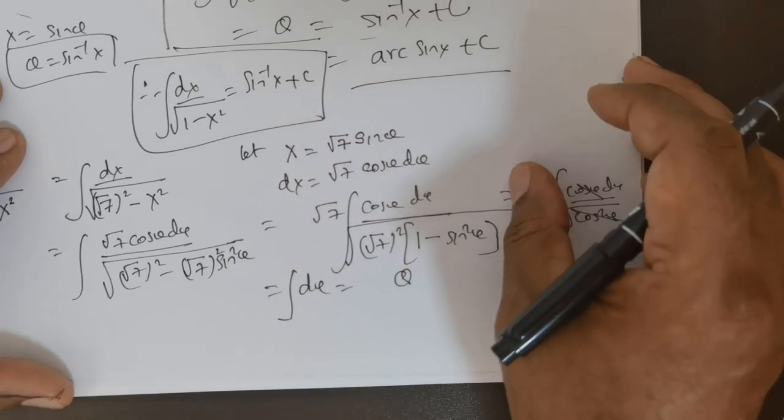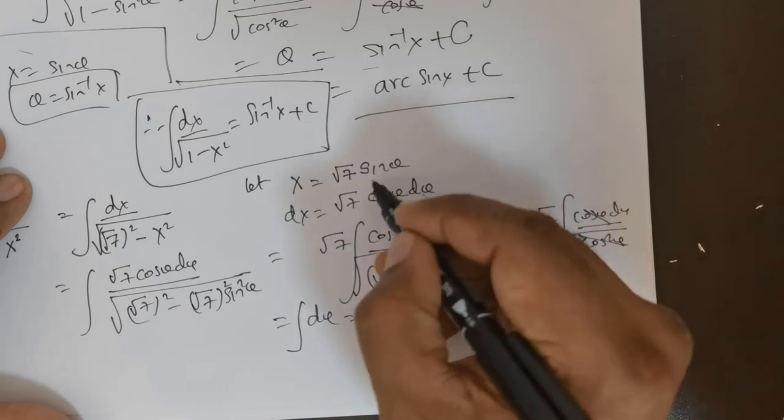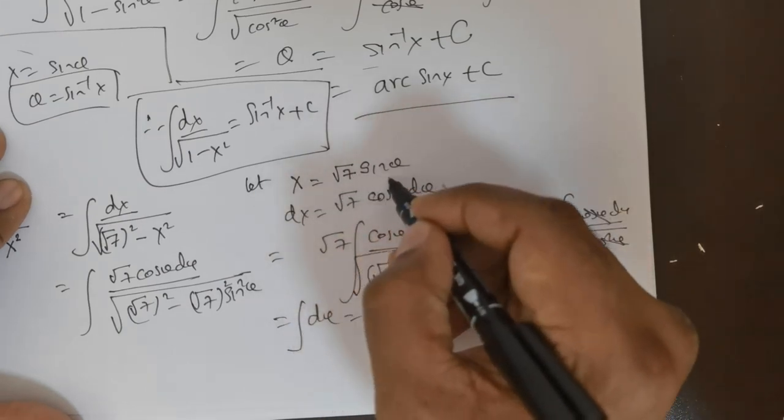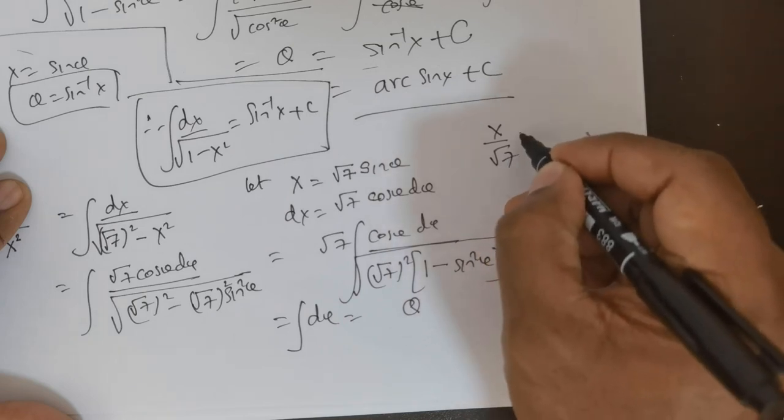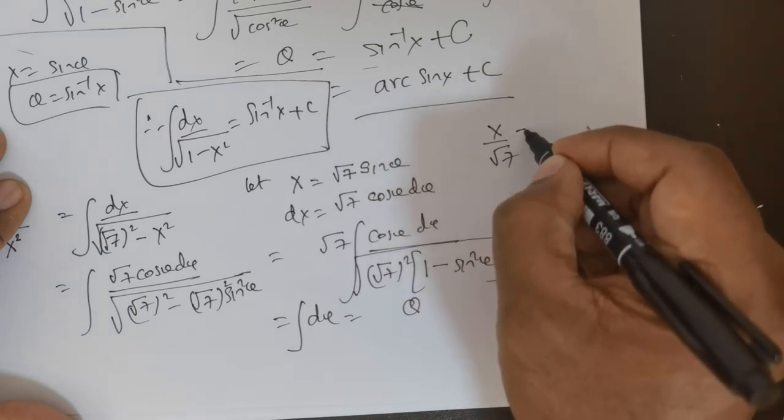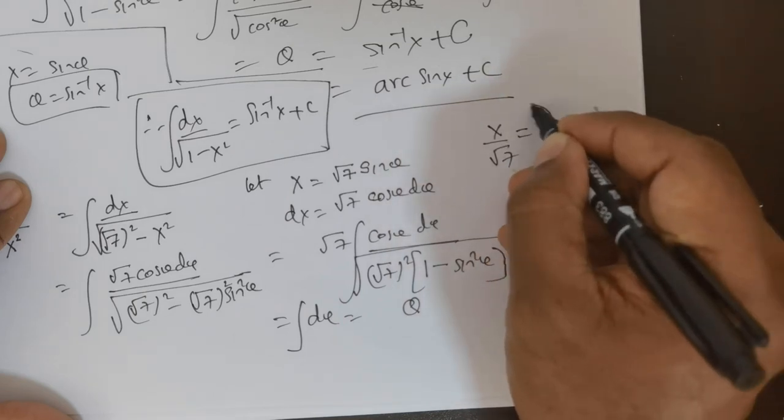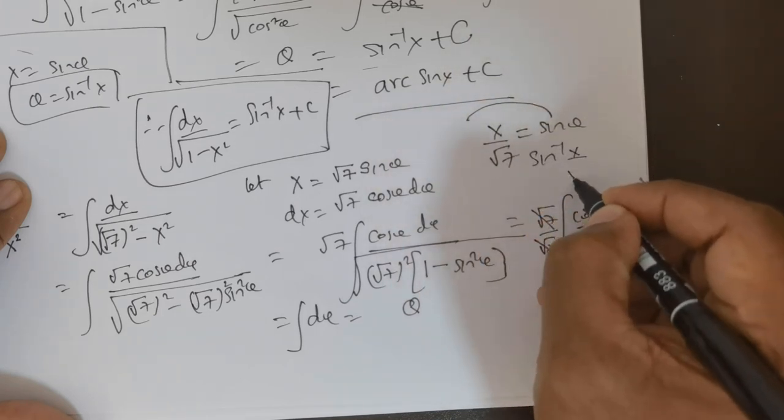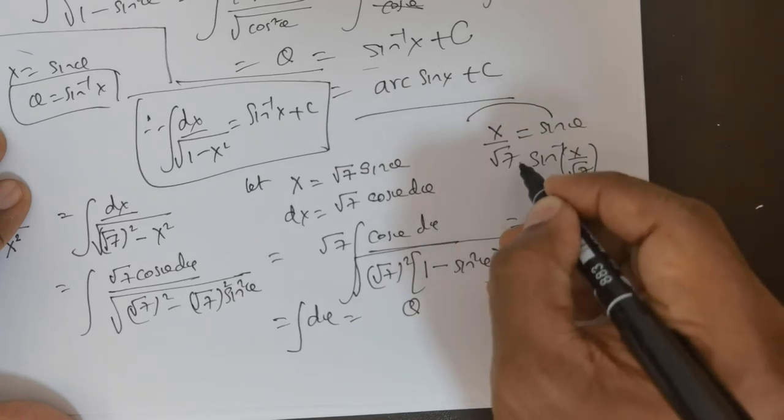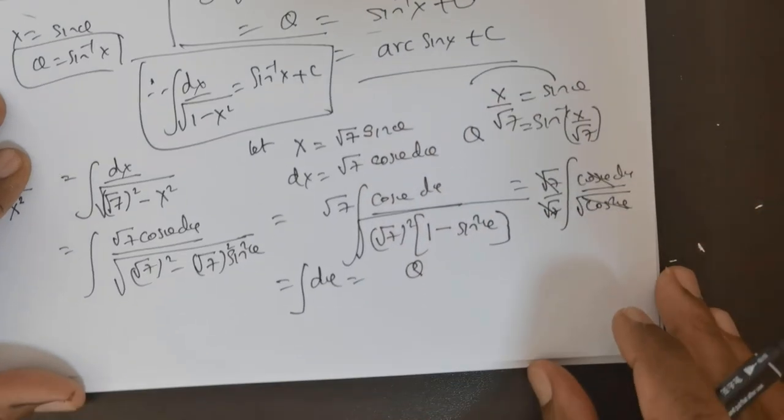Now we need to extract what theta is. For that, go back: x is taken to be root 7 times sin theta. So bringing root 7 down, you get x over root 7 equals sin theta. We need theta, so move sin to the other side. That gives us sin inverse of x over root 7. This equals theta.